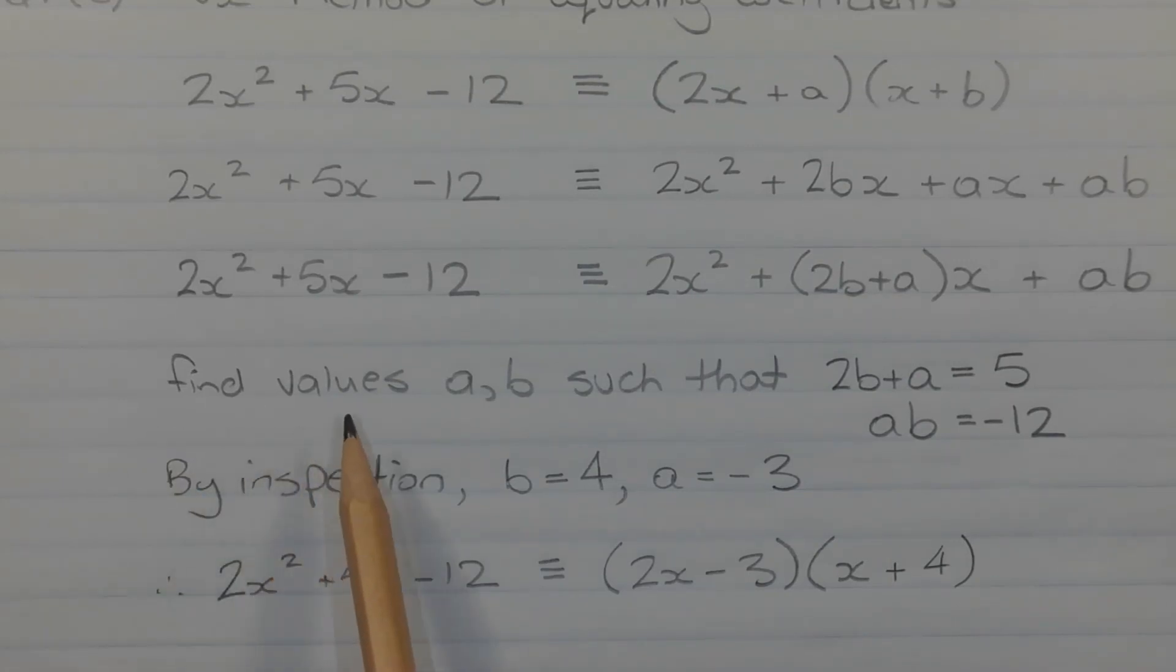So we want to find values a and b such that 2b plus a is equal to 5 and ab is equal to negative 12.